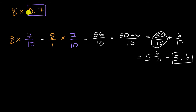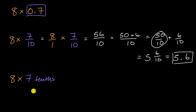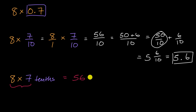Another way to approach this is to view it as eight times seven-tenths. If you have eight times seven of something, that's 56, so you're going to get 56-tenths.